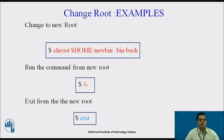For the change root example, to change to a new root, the user types: chroot /home/new/bin/bin/bash. This is the actual command for changing the home directory to the bash directory. Then run the command from the new root: ls. This shows we are present in the /new/bin/bin/bash directory. To exit from the new root, the user types exit, coming out of the new root of the file system.